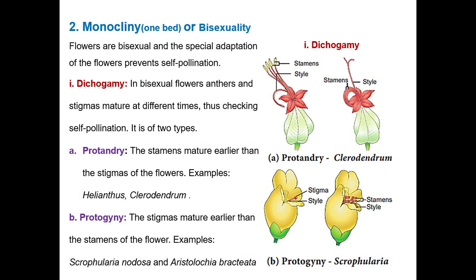Monocliny or bisexuality refers to flowers that are bisexual but have special adaptations to prevent self-pollination. Dichogamy: in bisexual flowers, the anther and stigma mature at different times, thus preventing self-pollination. In Clerodendron, the stamens mature earlier than the stigma — the anther matures first and pollinates another flower before the stigma matures — this is called protandry. This prevents self-pollination and promotes cross-pollination.